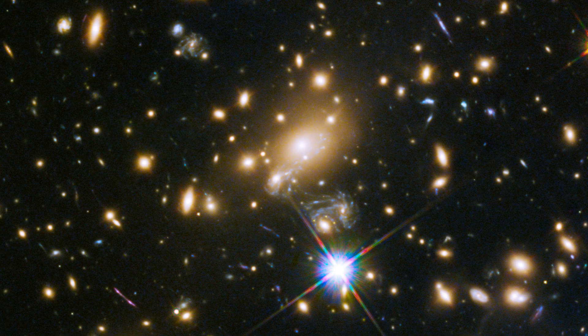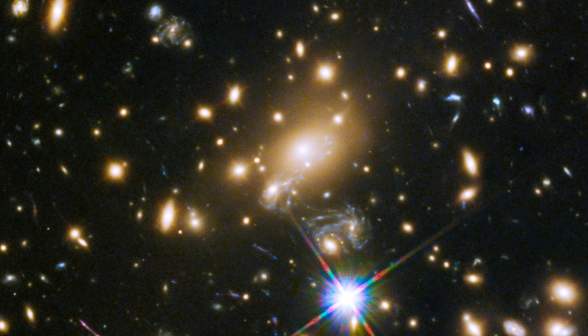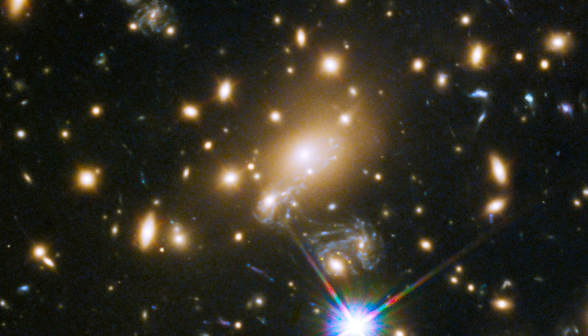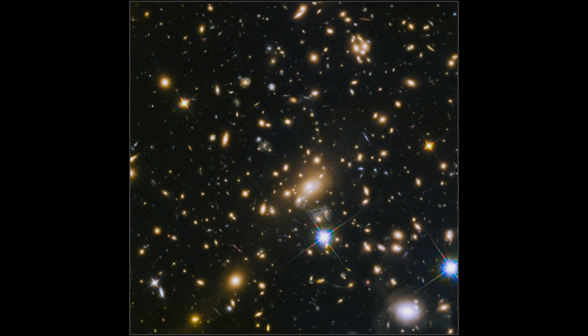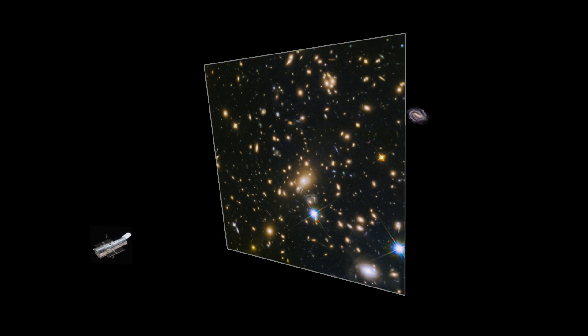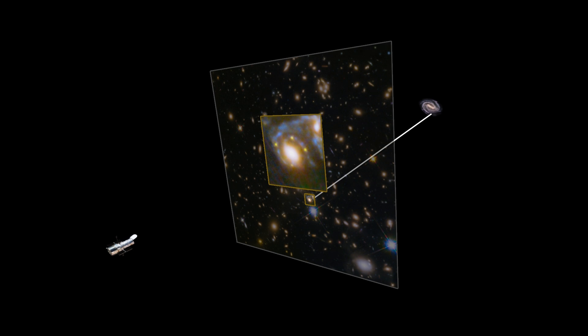One of the most distant clusters studied is MAX J1149.5 plus 2223, so distant that it takes the light 5 billion years to reach us. Using this cluster, Hubble has captured a rare event for the first time: the gravitationally lensed image of a supernova, arranged four times in a galaxy in the cluster.